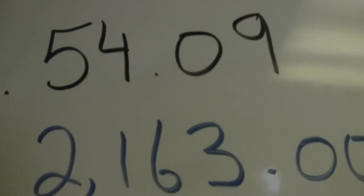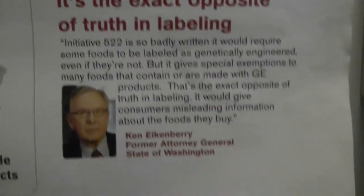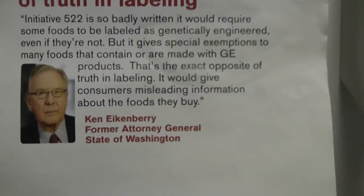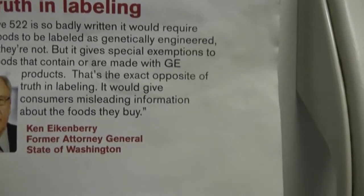We could even do better than that. We could fire the sucker that said this, because let me show you who's backing him up. Well, I actually can't fire him because he's unemployed. It's this man right here. He's an ex-attorney general. His name's Ken Elkenberry. He's a former attorney general of the state of Washington.